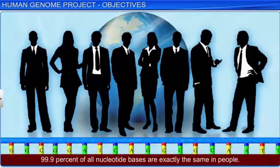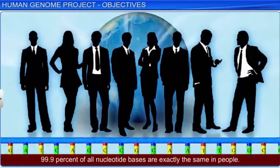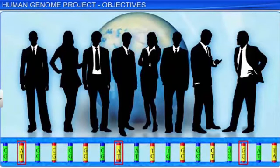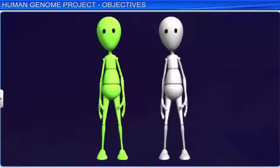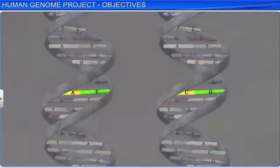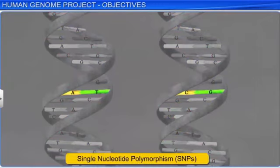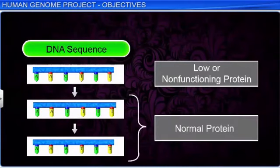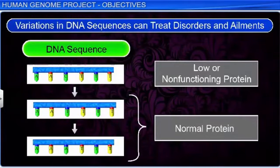99.9% of all nucleotide bases are exactly the same in people. Yet we differ from each other, and that is because our DNA sequences differ in certain places. Scientists have identified about 1.4 million locations with single base DNA differences, also known as SNPs or single nucleotide polymorphisms. Knowledge about variations in the human genome can equip us with more ways to diagnose, treat, or even prevent disorders and ailments that affect human beings.